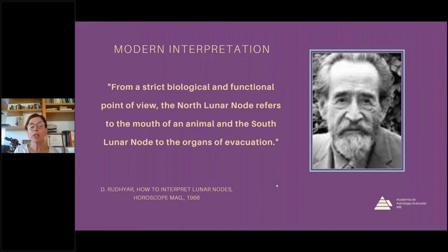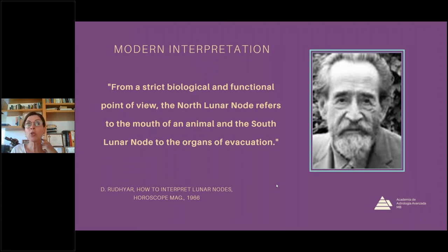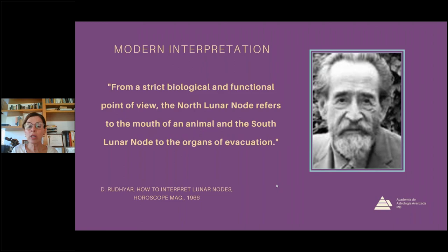The interpretation we're going to be looking at today is based on Dane Rudhyar, the French astrologer of last century. From a strict biological and functional point of view, the north lunar node refers to the mouth of an animal — something that we incorporate into our lives. And the south lunar node, through the organs of evacuation, represents something that we've already used and it's time to get rid of, because we have already used that energy.